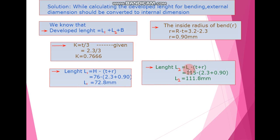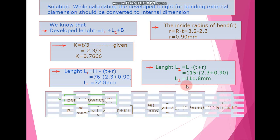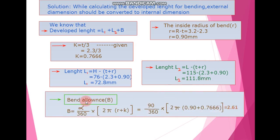Next, we calculate length L2. The formula for L2 is capital L minus the quantity (t plus small r). After putting in the dimensions of capital L, t, and r, we get L2 equal to 111.8 mm.